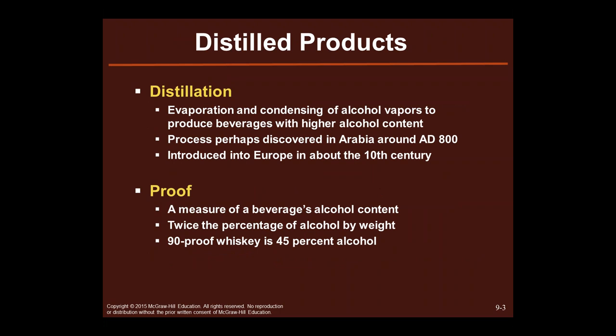Distilled products — what we do here is evaporation and condensing of alcohol vapors to produce beverages with higher alcohol content. Since naturally things get to about 12% to 15%, you have to go through the distillation process — evaporating and condensing — to create those higher alcohol content products. There are ideas that this process was maybe discovered in Arabia around AD 800, just a guess, and introduced to Europe in about the 10th century.